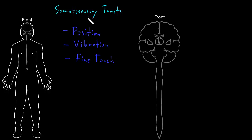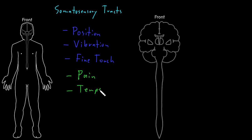The other big grouping of types of somatosensory information that tend to travel together includes the sense of pain, temperature sense, and what we can call gross touch sense, or less precise touch sense information.